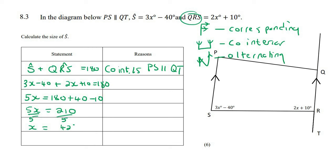Now, that's not the answer. They said calculate the angle S. So angle S is this one over here. So you're now going to say 3 times 42 minus 40, and that'll be 86 degrees.